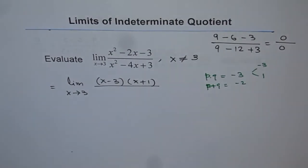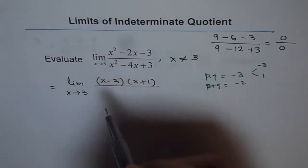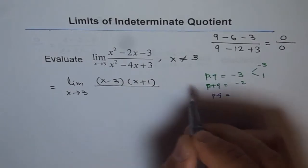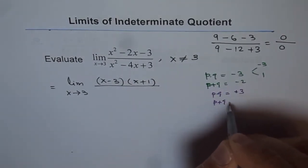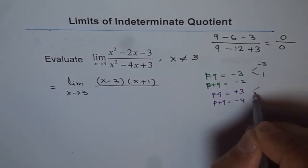How about the denominator? For denominator, p times q is equal to plus 3, and p plus q is minus 4.